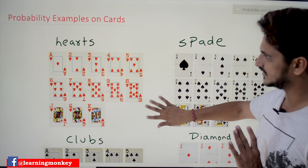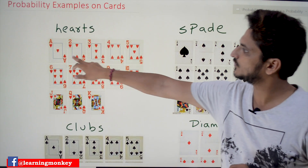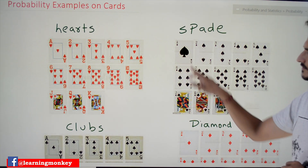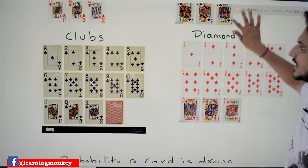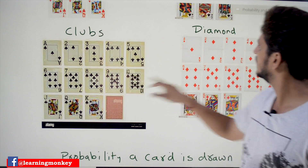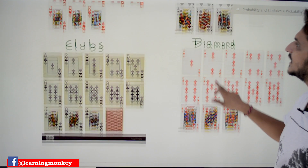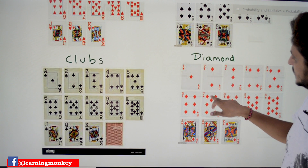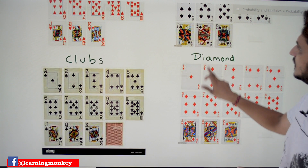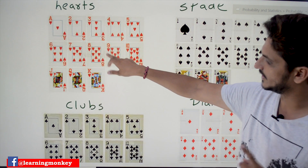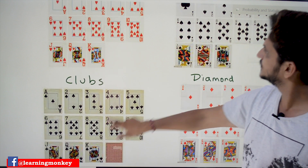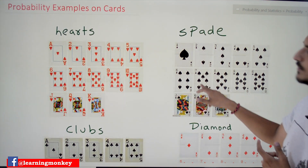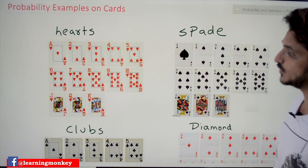In playing cards we are having four different symbols. Hearts is one symbol, and this is the spade symbol. Next we are having the club symbol, and this is the diamond symbol. One important point to remember: the diamond symbol is red in color, and the heart symbol is red in color. Clubs and spade are black in color.